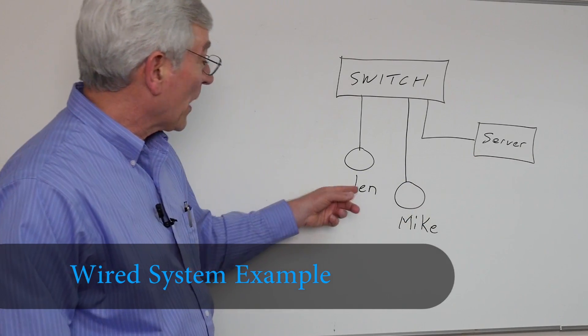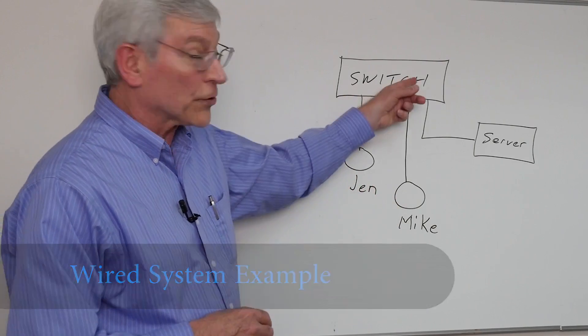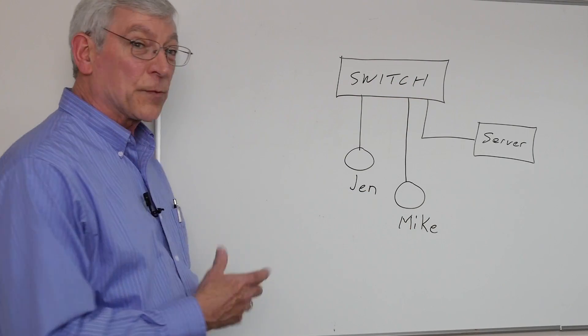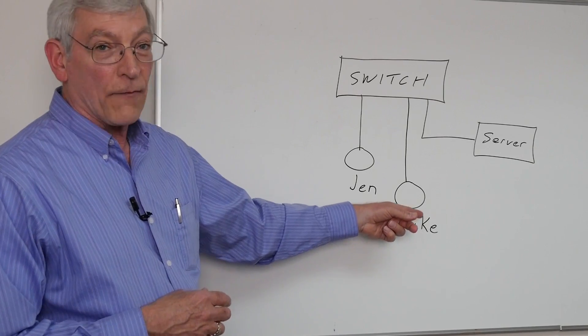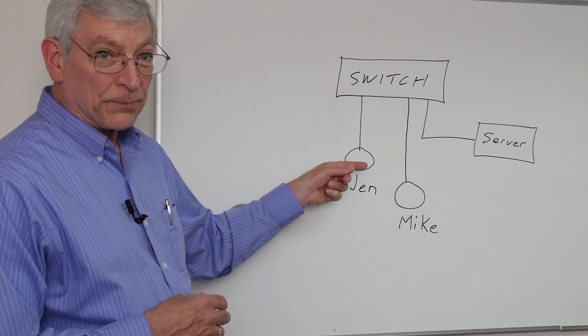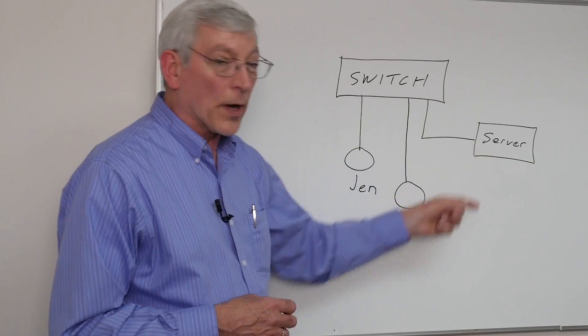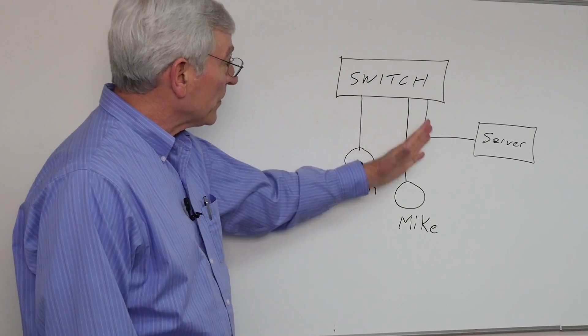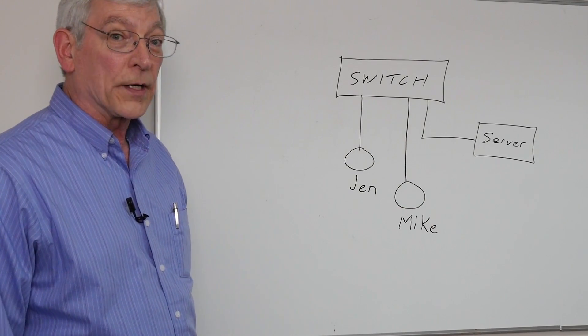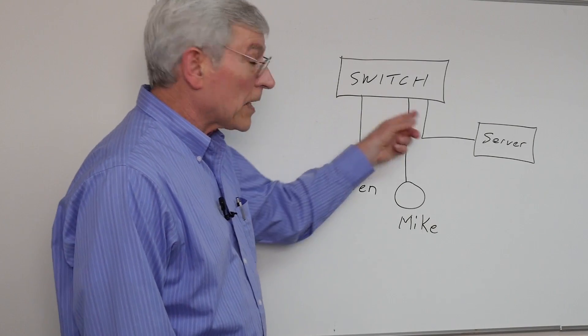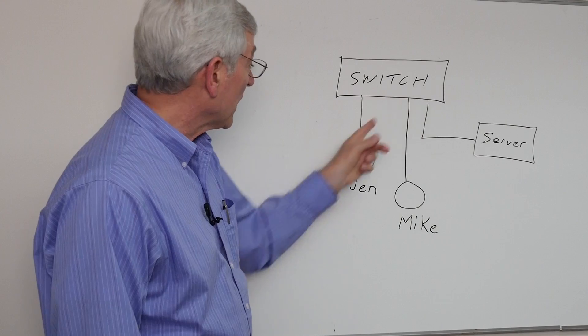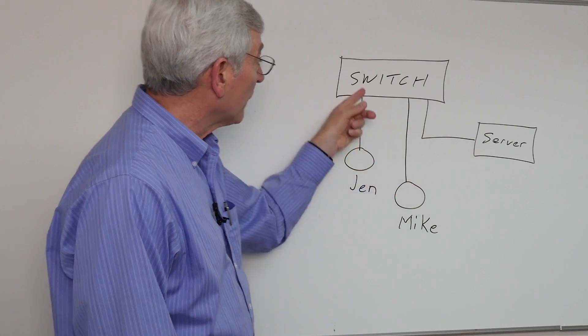We've got a server on the board and we've got a couple of users connected to the server via a switch, standard network diagram. And at this particular time, Mike's not in the office, only Jen is here. And from the server, she's going to download a big file. And this is a modern network. It's operating at one gigabit. So we've got a thousand megabits per second or one gigabit per second data transfer speed when Jen downloads this file.